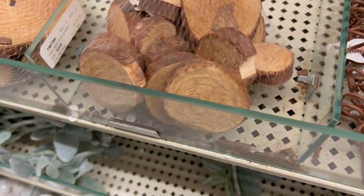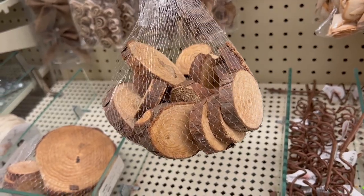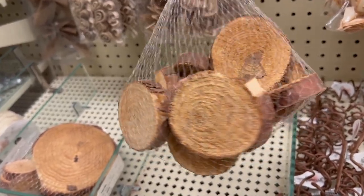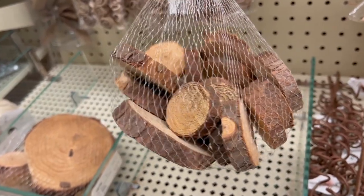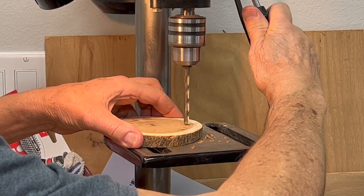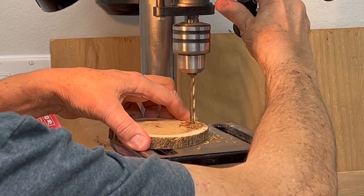But anyways, Dollar Tree does carry them too, but it's three for $1.25. So maybe not as good of a deal as you can get at Hobby Lobby. And Marvin helped me on this part and drilled three holes into the wood slice. So that is going to be my base.